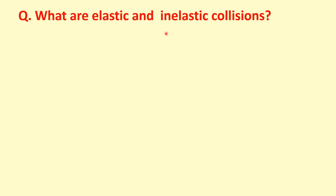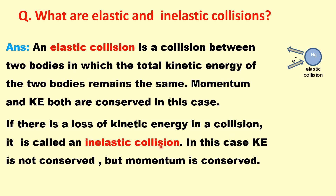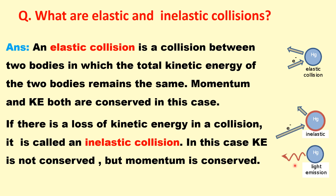What are elastic and inelastic collisions? Elastic collisions are those where the total kinetic energy of the two bodies remains the same — both momentum and kinetic energy are conserved. The electron strikes the atom and after the collision both momentum and kinetic energy are conserved. In the case of inelastic collision, there is a loss of kinetic energy, and some energy comes out as radiation or light emission. In this case kinetic energy is not conserved, but momentum is conserved.